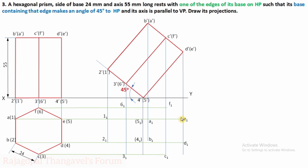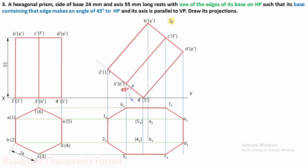Always start with the boundaries or outer edges of the solid. Connect: 1₁ to 2₁, 2₁ to 3₁, 3₁ to C₁, C₁ to D₁, D₁ to E₁, E₁ to F₁, F₁ to 6₁, and 6₁ to 1₁ — these form the outer boundary. The top face hexagon A, F, and all corners are visible from the top, so complete that hexagon: F₁ to A₁, A₁ to B₁, B₁ to C₁. The top face is completely visible.